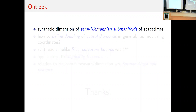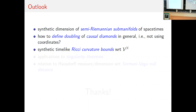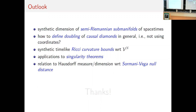To conclude with an outlook: we examined measures in Minkowski spacetime and it should be straightforward to transfer results to smooth spacetimes and submanifolds. We also need to define doubling of causal diamonds in general Lorentzian pre-length spaces without using coordinates — we have ideas but nothing definitive yet. Future directions include: time-like Ricci curvature bounds with respect to these measures; applying these measures to singularity theorems by getting measures on hypersurfaces as in Hawking's theorem; and comparing with the intertime distance approach of Sämann-Vega, which gives a real metric from a time function, relating their Hausdorff measures to ours.